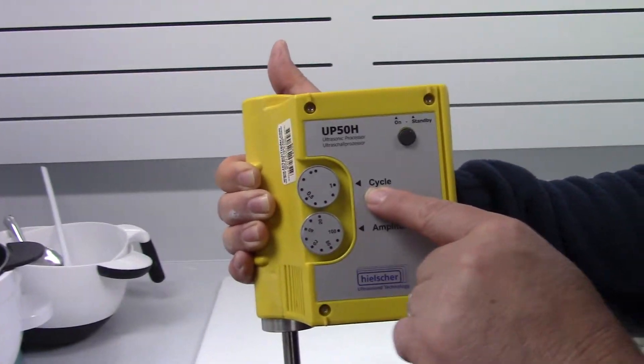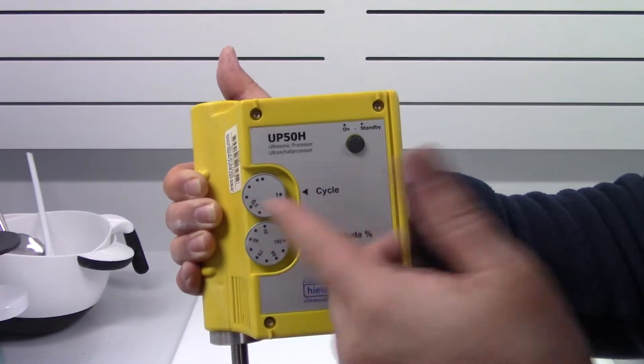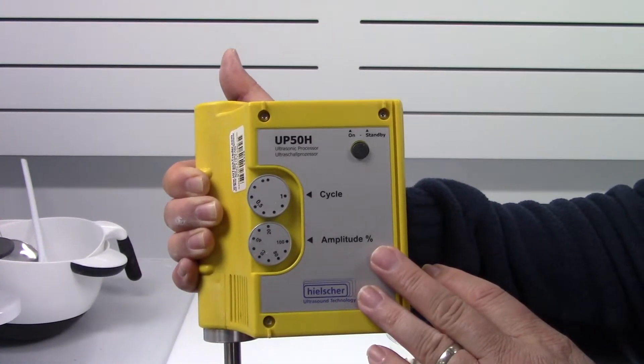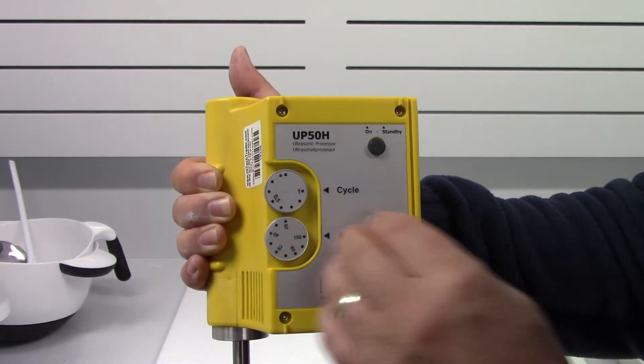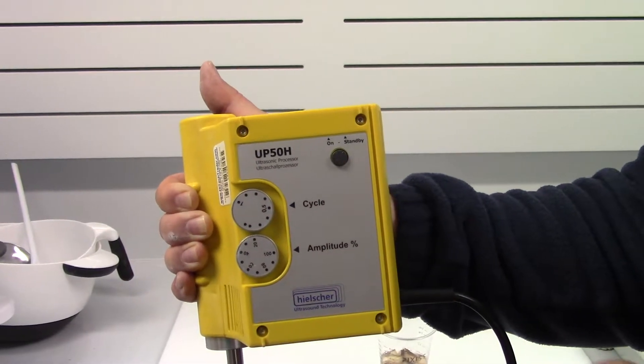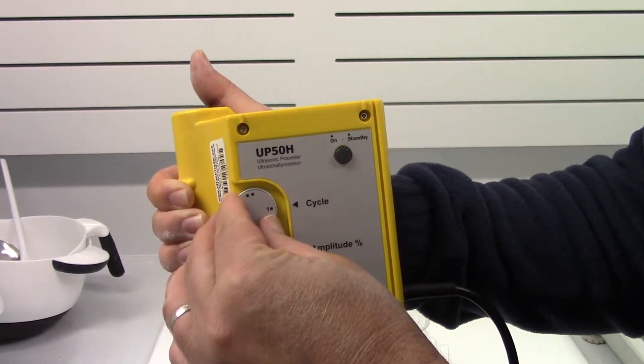The cycle time should be left at 1. That is in continuous mode. It's 100% on. If you'd like it to pulse, you could, for example, have it pulse at 50% and leave it at 1.